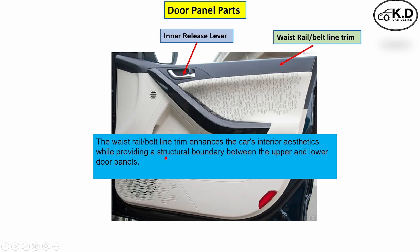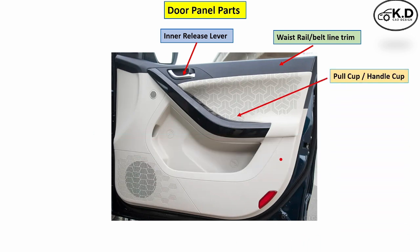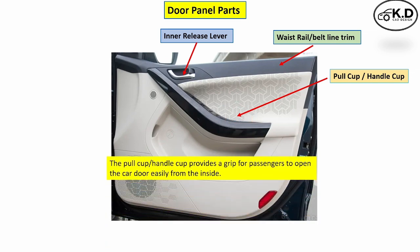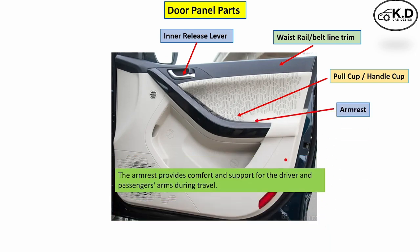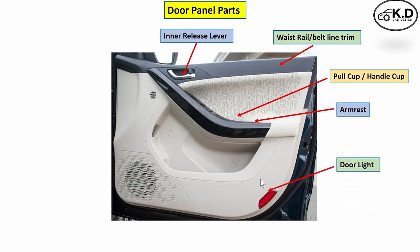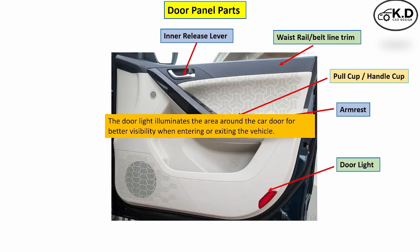The next part is the pull cup, which provides the grip to pull the door for the passenger. The next part is the armrest, whose function is to provide comfort and support to the arm of the driver and other passengers. The next part is the door light, which provides visibility and a pleasant look for better appearance.